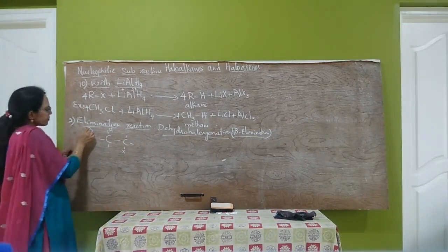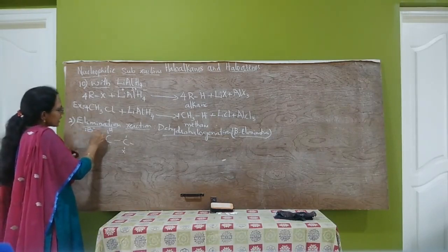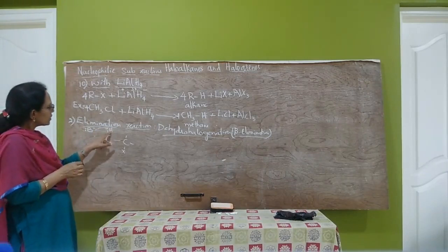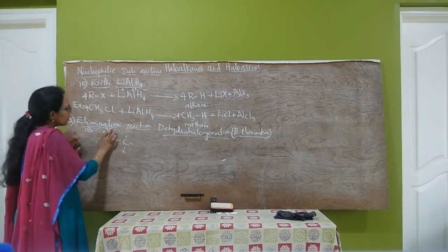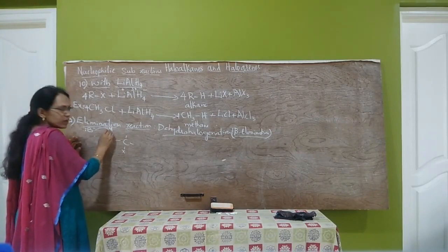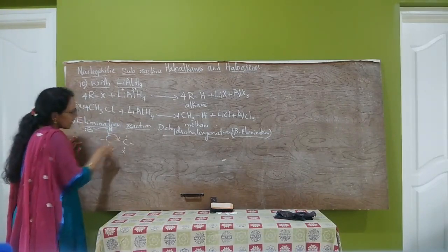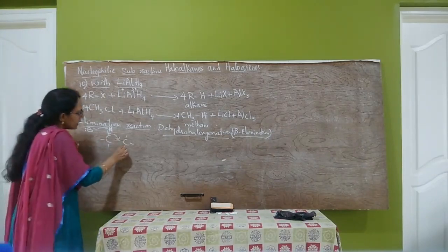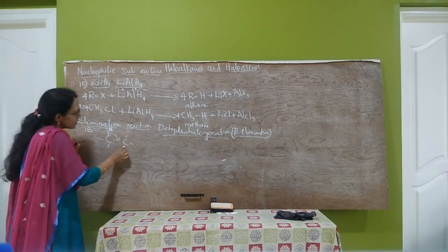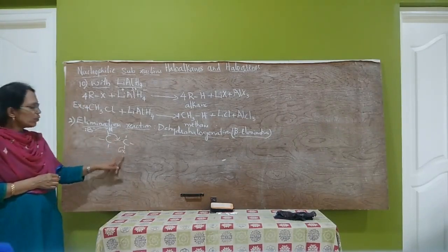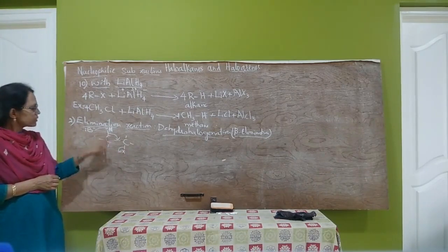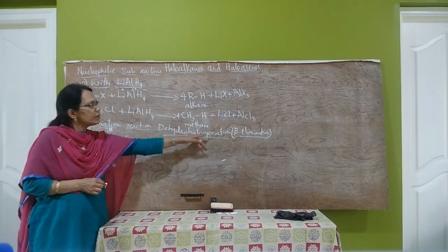A base contains a lone pair of electrons. When the base attacks the hydrogen (proton), it accepts this proton. As the proton is removed, the electrons are attracted towards carbon and shift to form a double bond. In order to satisfy the valency of carbon, the adjacent halogen is removed as halide ion, X minus. Therefore, removal of one hydrogen and one halogen occurs — this is the dehydrohalogenation reaction.